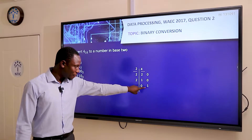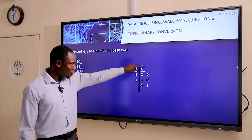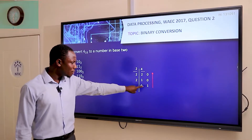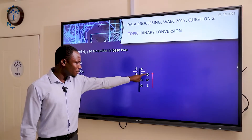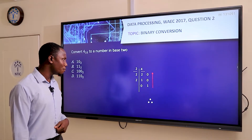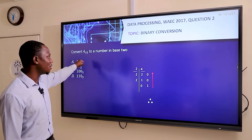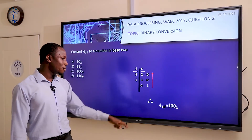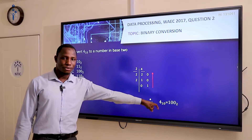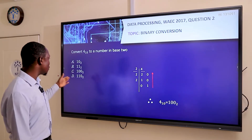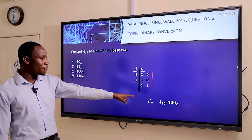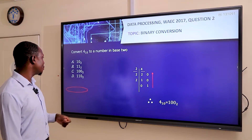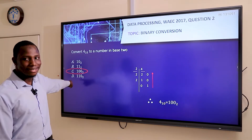We take the remainders from bottom to top: 1, 0, 0. Therefore, when we convert 4 in base 10 into a number in base 2, we get 100 in base 2. Looking at our options, we have 100 in base 2, which is option C.